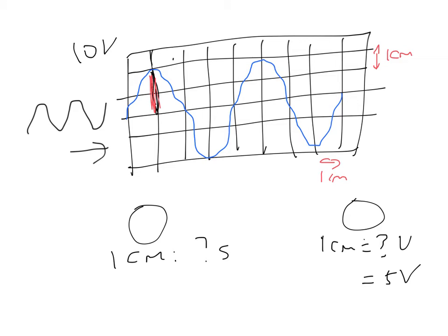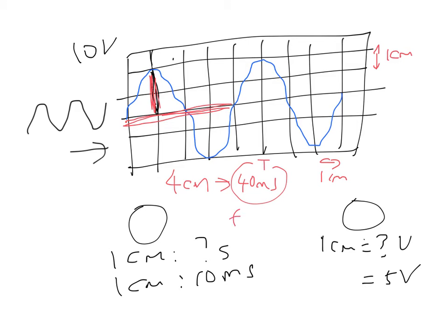To determine the period, find the time taken for one complete cycle. In this example, one cycle spans 4 cm. If the time base is set to 1 cm per 10 milliseconds, then the period is 4 cm × 10 milliseconds per cm, which equals 40 milliseconds. To find frequency, take 1 divided by the period and you will get the frequency of the wave.